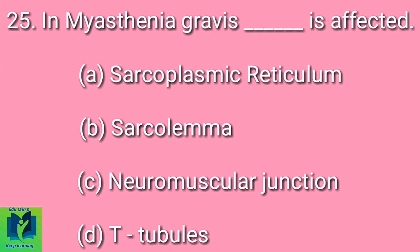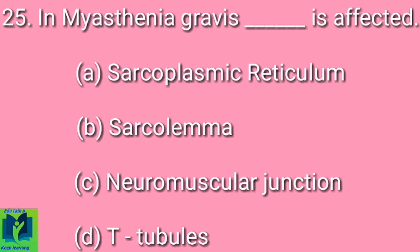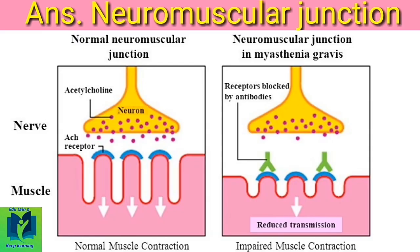In myasthenia gravis, dash is affected. Option A: Sarcoplasmic reticulum. Option B: Sarcolemma. Option C: Neuromuscular junction. Option D: T-tubules. Answer: Neuromuscular junction.